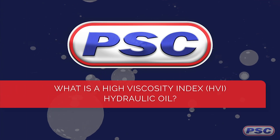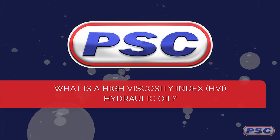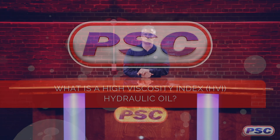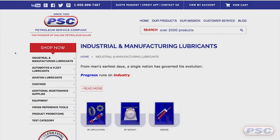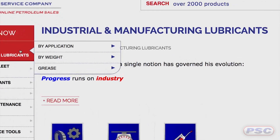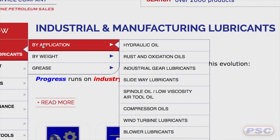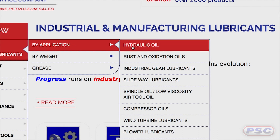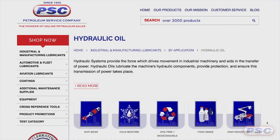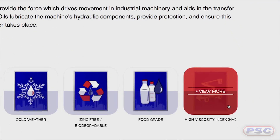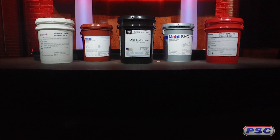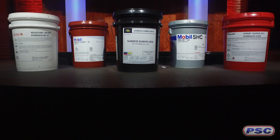Hello, Jim here from PSC, coming to you from our red brick studio. So what is a high viscosity index hydraulic oil? Also referred to as HVI, or sometimes MV, these hydraulic oils are formulated to maintain their ideal viscosity.